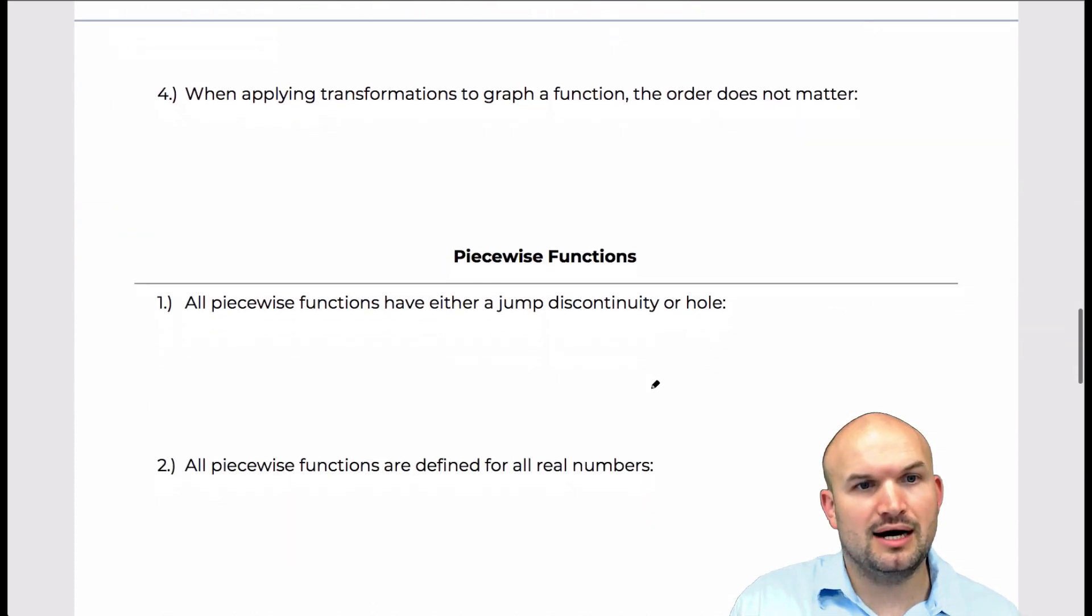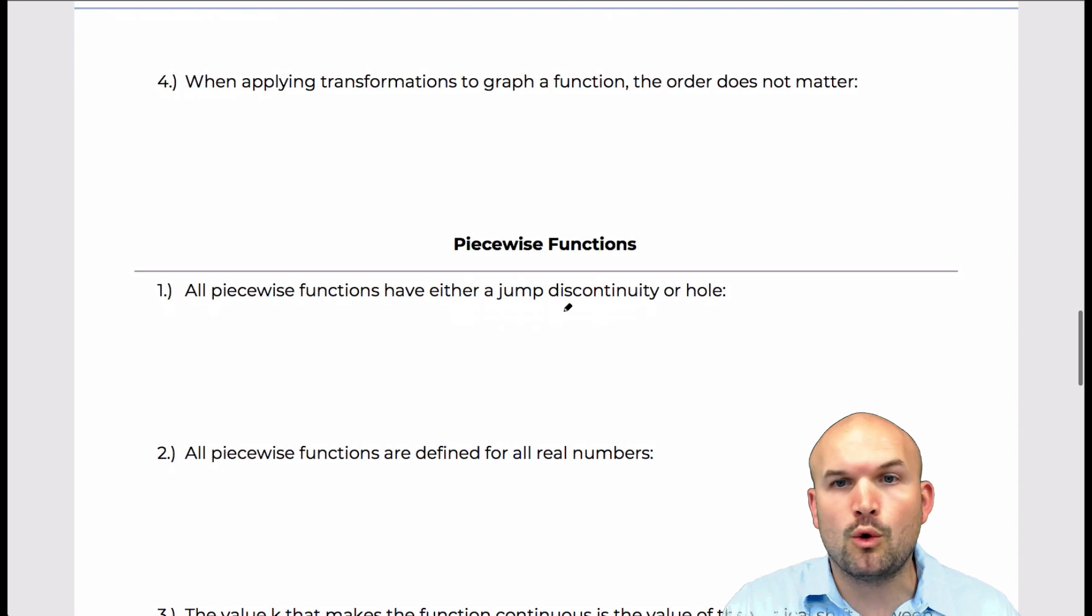All right, next one. When applying transformation to a graph, the order does not matter. And this one will get a lot of students and the basic thing that we want to look at when we're dealing with the function is following the order of operations. So the function that I chose is f(x) equals negative x squared plus 1.